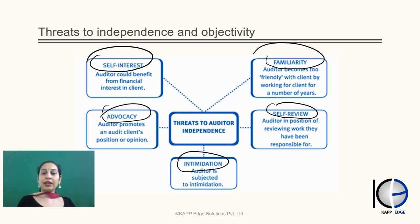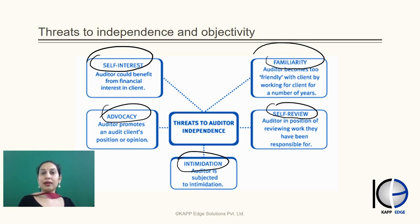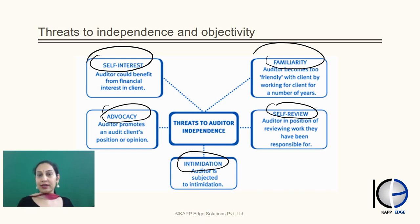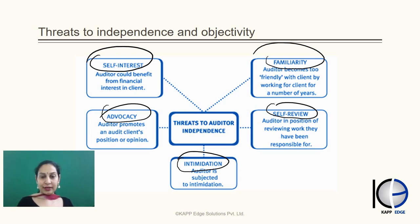The five major categories of threats are: self-interest, self-review, familiarity, advocacy, and intimidation. The first thing is to know how to identify the threat — and in every threat there may be certain subcategories. For example, under self-interest there can be fee dependency, shares in the client, and so on. You need to tell precisely whether it is self-interest plus fee dependency or what. Unless an auditor can identify the threat, how will you mitigate it? That is why identification of threats is a critical first step.